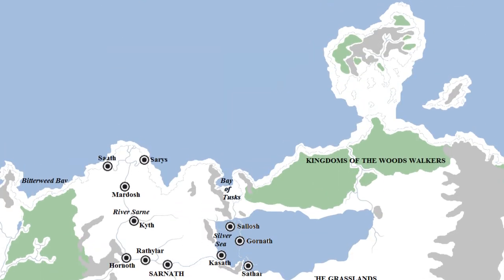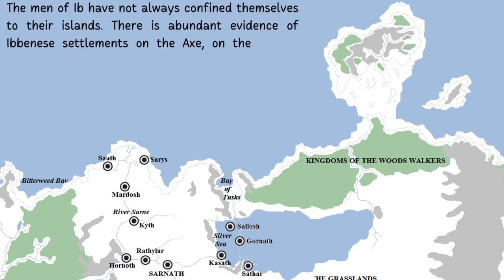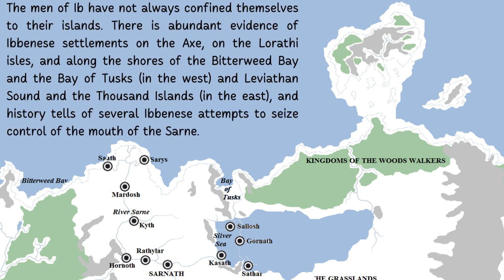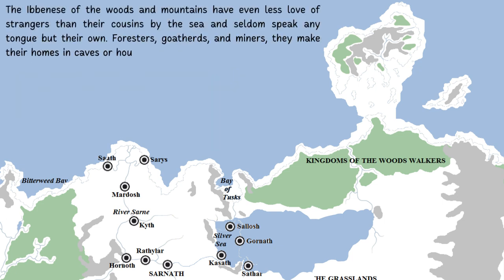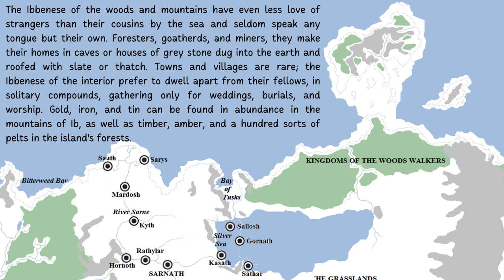The other major change visible on the map is the fact that Ib is a peninsula and not an island. There are various islands very close to the mainland, to Ib, and to each other. A second major clue is the Ibbenese themselves. At its greatest extent, the Ibbenese foothold on Essos was as large as Ib itself and far richer. There is evidence of Ibbenese settlements on the Axe, the Lorathi Isles, and along the shores of the Bitterweed Bay, the Bay of Tusks, Leviathan Sound, and the Thousand Islands — they were living all over northern coastal Essos, not just Ib. Most Ibbenese now live on Ib and the smaller islands surrounding it, but there are people who live in the woods and mountains of Ib. They make their homes in caves or houses of grey stone which they dig into the earth and do not live in towns. Sounds very Children of the Forest to me.